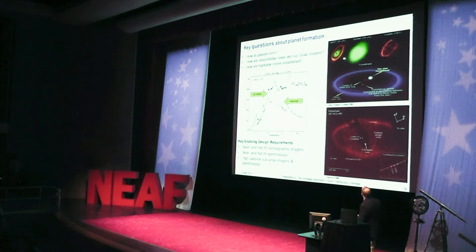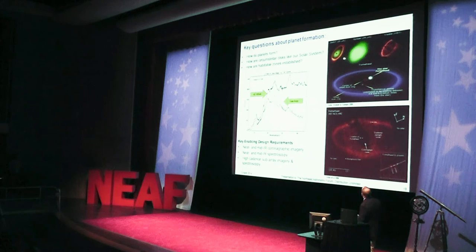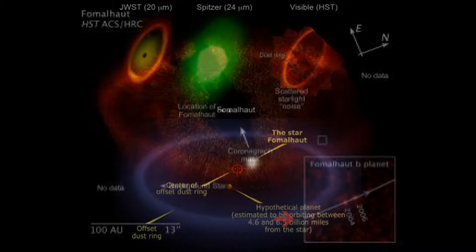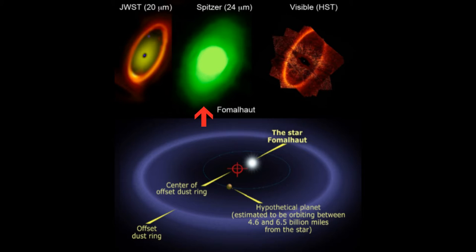The high angular resolution of JWST will allow us to see planets directly. This is a famous Hubble image of a star called Fomalhaut showing its debris disk and a point source observed in two different epochs — the first direct image of a planet orbiting another star. This is Fomalhaut measured at 24 microns in the mid-infrared with Spitzer. This is the same field with Hubble in visible light. And this is a simulation of what JWST will see at about the same wavelength as Spitzer, showing how JWST will bring unprecedented angular resolution in the infrared — so important for observations like this.